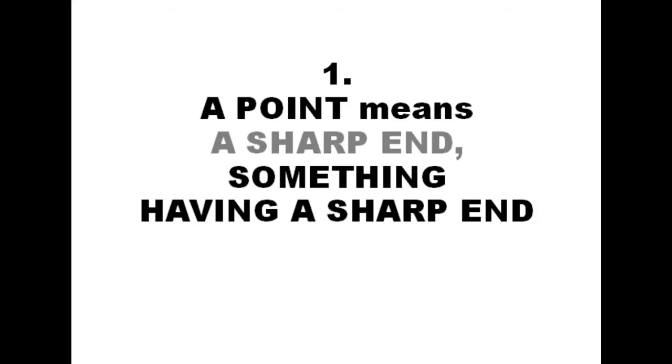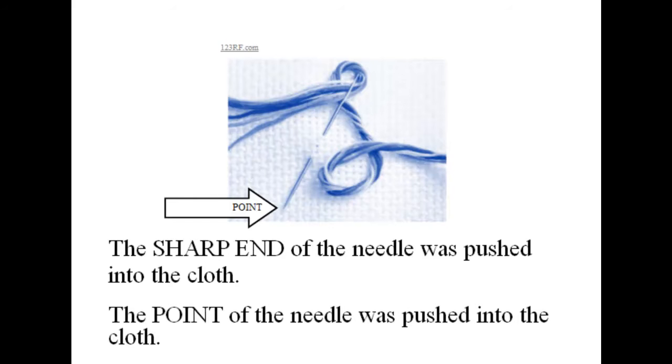Point. A point means a sharp end, something having a sharp end. The sharp end of the needle was pushed into the cloth. The point of the needle was pushed into the cloth. And the arrow says point.